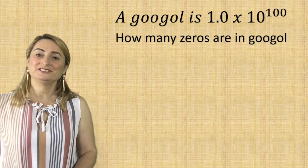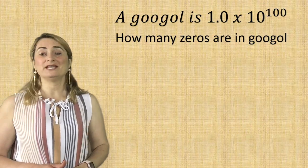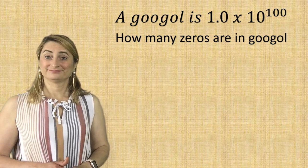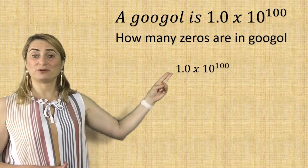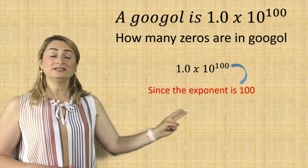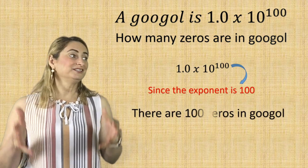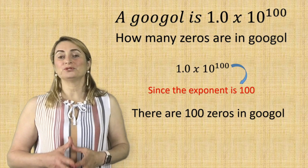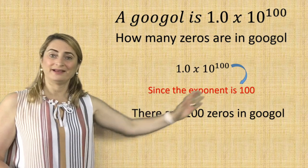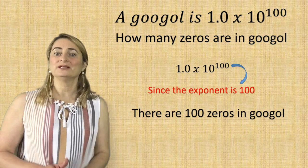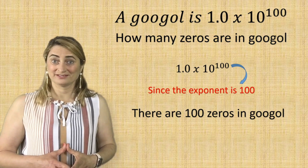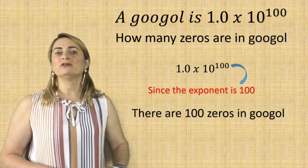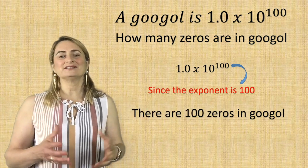Here's the last example for today's lesson. A googol is 1 times 10 to the power of 100. How many zeros are in a googol? Since the exponent is 100, that means there are 100 zeros in a googol. And that's the main reason why we write numbers in scientific notation — I don't want to write 100 zeros; that's a waste of time and effort. So we write in scientific notation to show huge numbers like a googol or very small numbers like the size of the coronavirus.